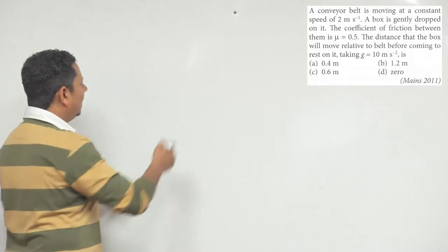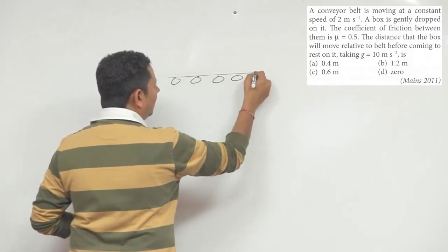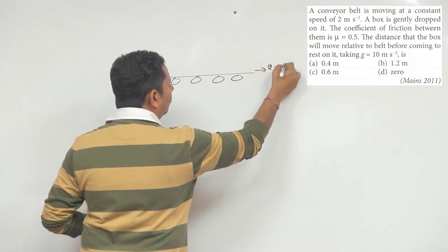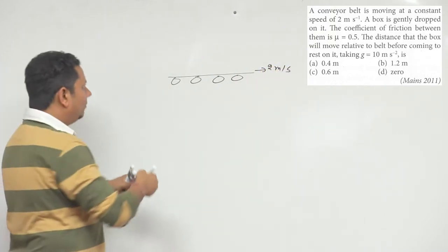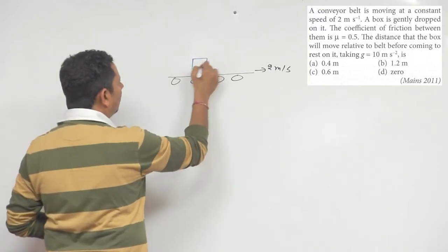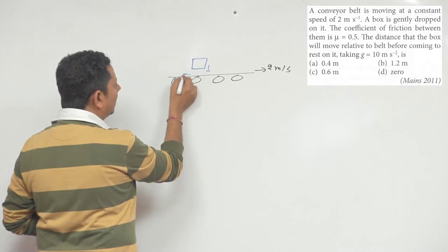Alright, so the situation is like this - we have a conveyor belt moving at 2 meter per second. We gently dropped a box on top of it. When the box touches the belt...